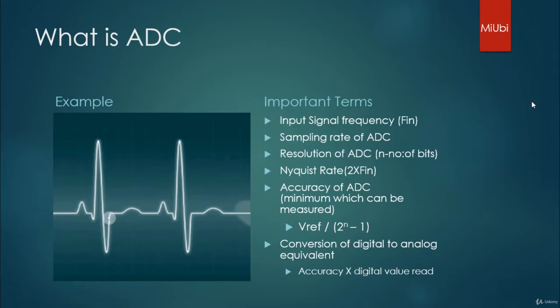One more important parameter is the resolution of ADC - that means how many number of bits you are using to represent your analog signal into a digital equivalent. For example, a 10-bit ADC can go to a maximum value of 2 power 10 minus 1, which is 1023.